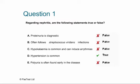D: Hypertension is common — this is true. Hypertension is an almost inevitable part of nephritis, and we'll discuss the pathophysiology shortly. E: Polyuria is often found early in the disease — that's also false. Oliguria is found early, and only later, when renal function improves, do patients sometimes become polyuric. So E is false.